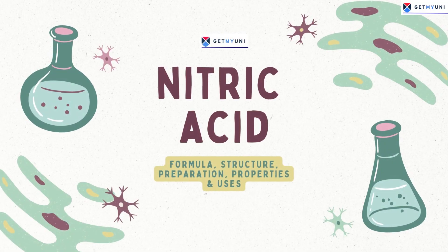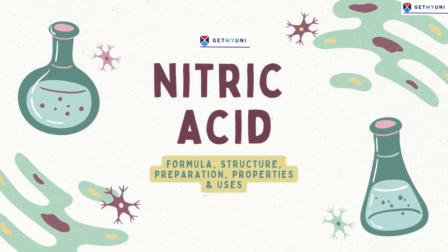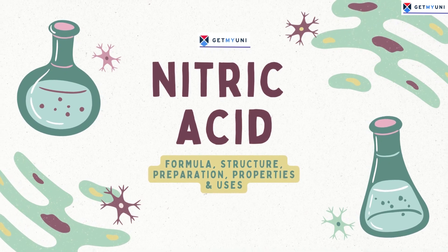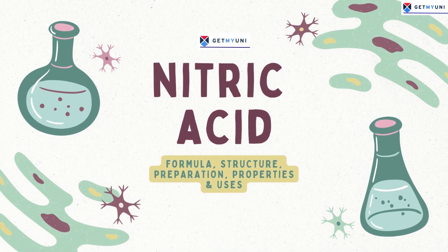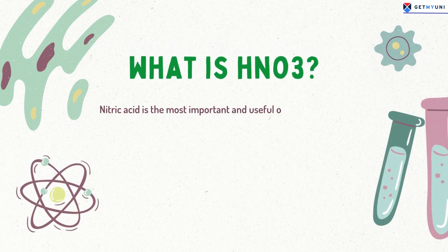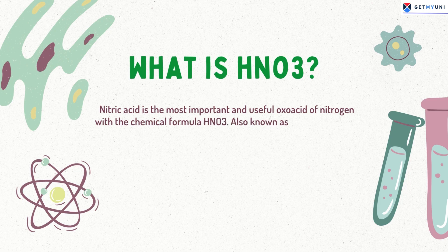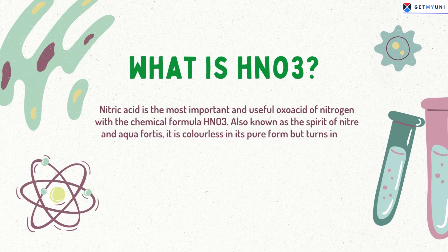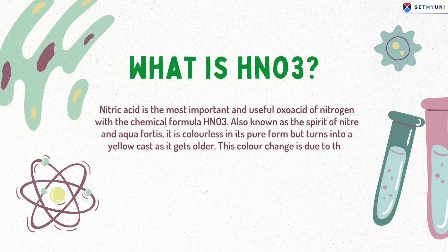In today's video we will discuss nitric acid and its various properties. Nitric acid is the most important and useful oxoacid of nitrogen with the chemical formula HNO₃, also known as the spirit of nitre and aqua fortis. It is colorless in its pure form but turns into a yellow cast as it gets older. This color change is due to the decomposition of nitric acid to oxides of nitrogen and water.